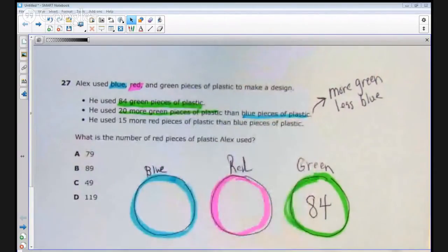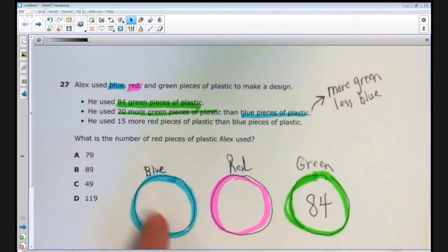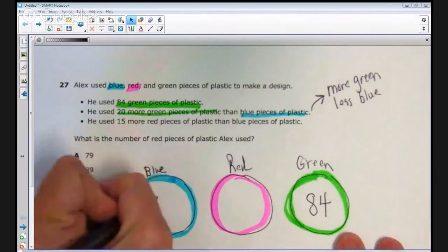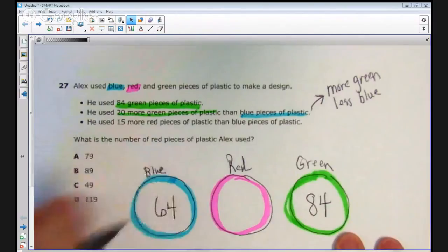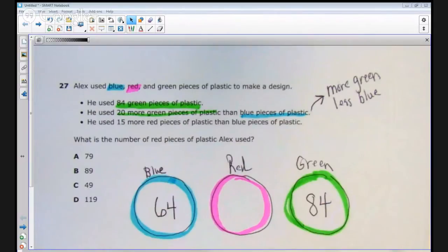So, what I need to do is look at the number here. I have an 84. There needs to be more green and less blue. So, I need to put a number inside this circle, and the number I need to put is 64 because 64 is 20 fewer. So, there's more green, less blue, and there's a 20 difference there. 20 more pieces of green plastic than blue pieces of plastic. All right, we're going to use that same strategy again with the next statement.